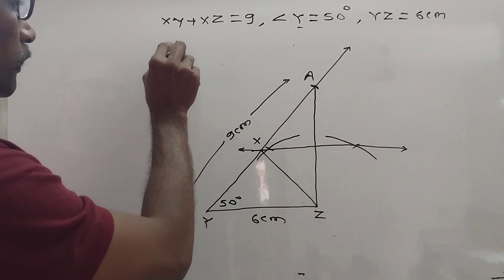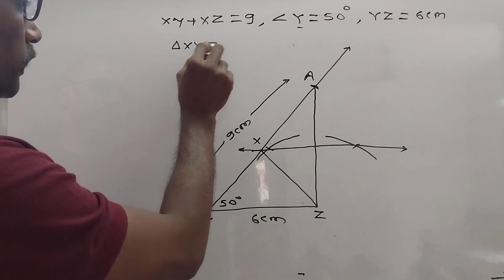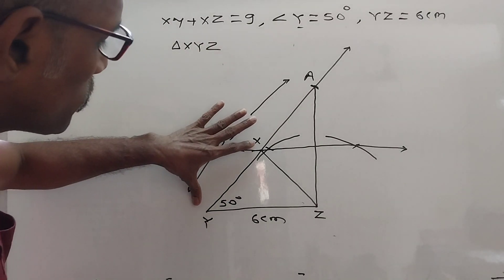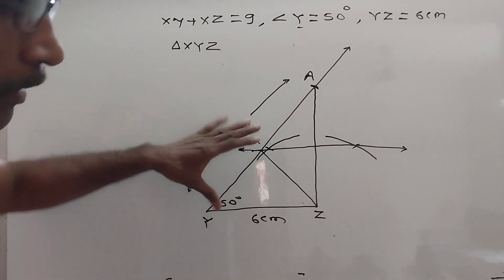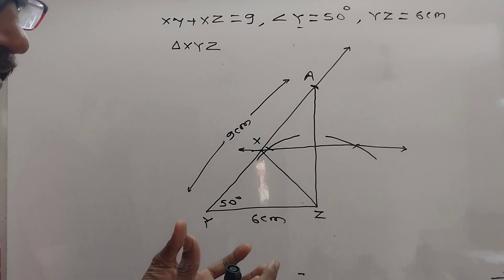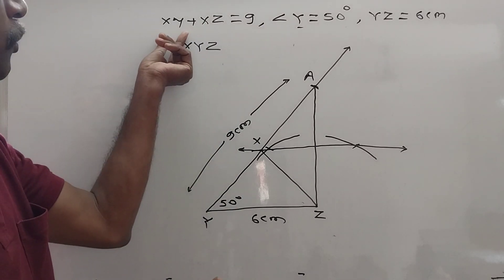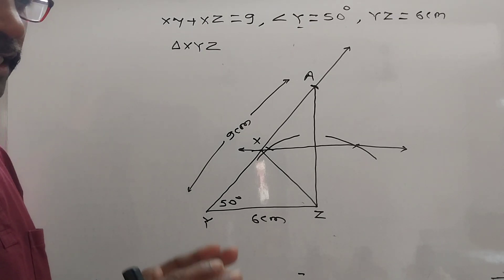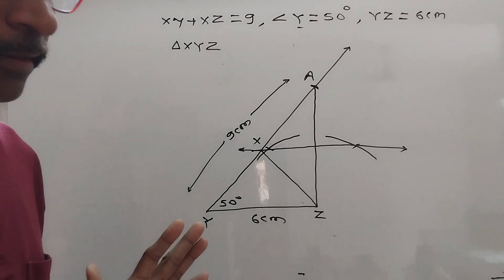X, Y, Z. Now when we measure this XY and XZ, and when we add both lengths, then we get XY plus XZ is equal to 9 cm. Did you understand? Very simple method. Use this method.